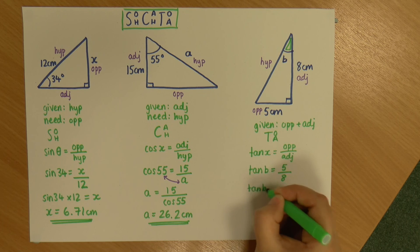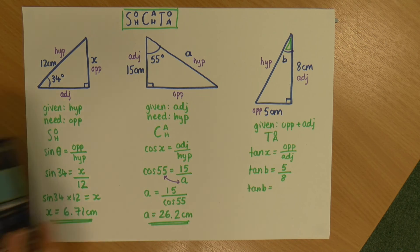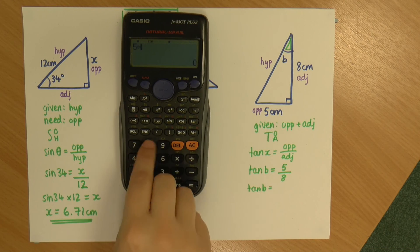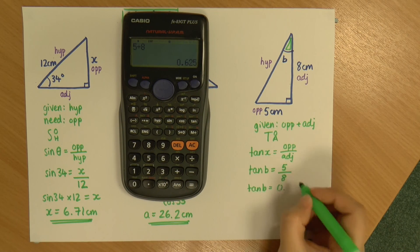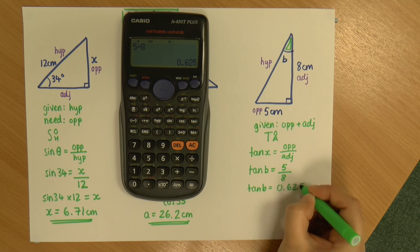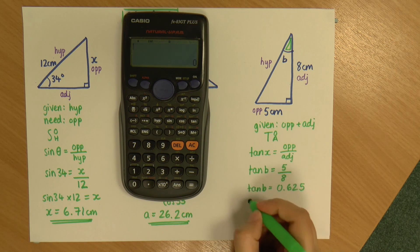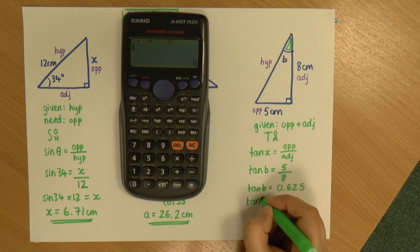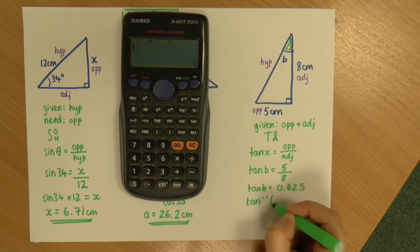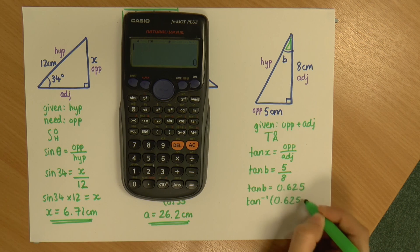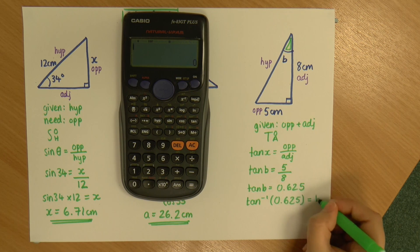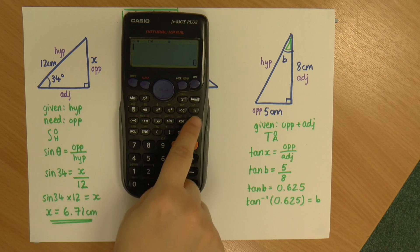Okay, so tan B, and I'm going to do 5 divided by 8. And I'm actually going to pop it in a calculator, 5 divided by 8. And that gives me 0.625. There we go. So now I know that tan of the angle is 0.625. So in order to get B, I need to do the inverse. So it's tan to the minus 1 of 0.625. And that will give me B.